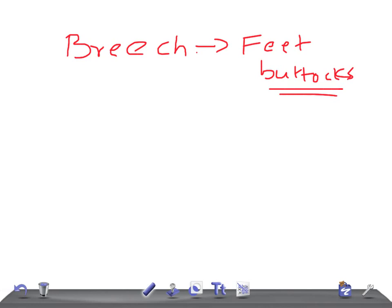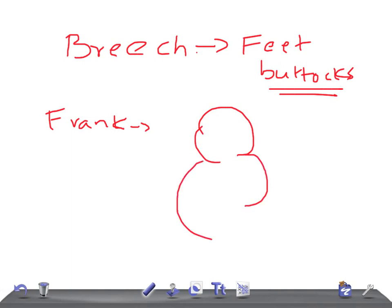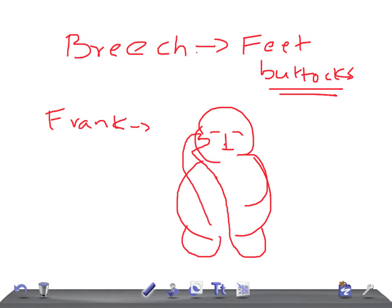There are different types of breech presentation. In frank breech, the thighs are flexed and the legs are extended. If I draw it: the thighs flex upward and the legs extend straight — that's what it looks like. Frank breech is the only kind that could potentially be safely delivered vaginally.